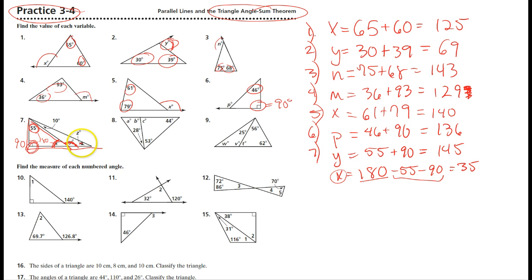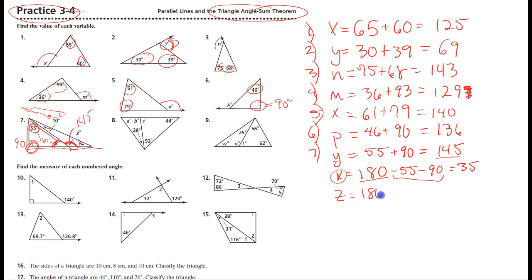That leaves z. I'll use the same logic: y was one hundred and forty-five, and this angle up here is ten. So z is in this long, skinny triangle with angles ten, one hundred and forty-five, and z. Setting it up: one hundred and eighty minus ten minus one hundred and forty-five gives z equals twenty-five.